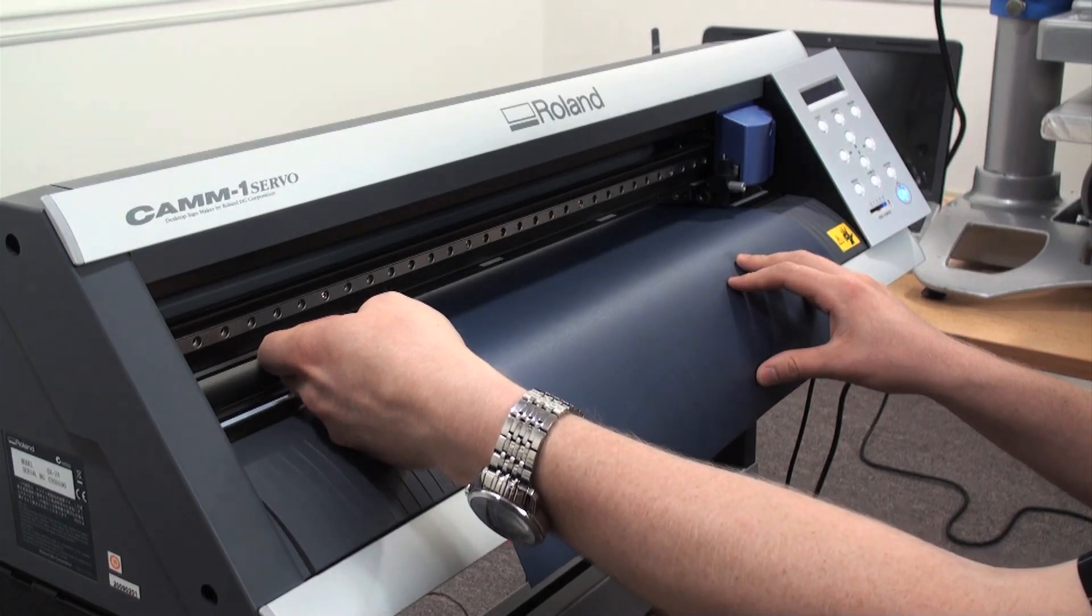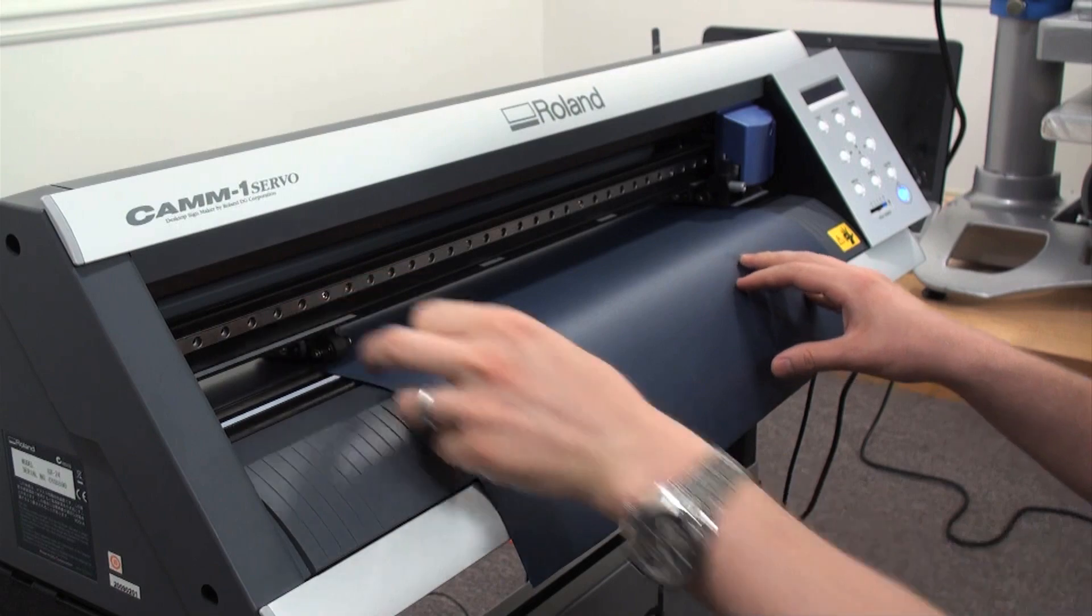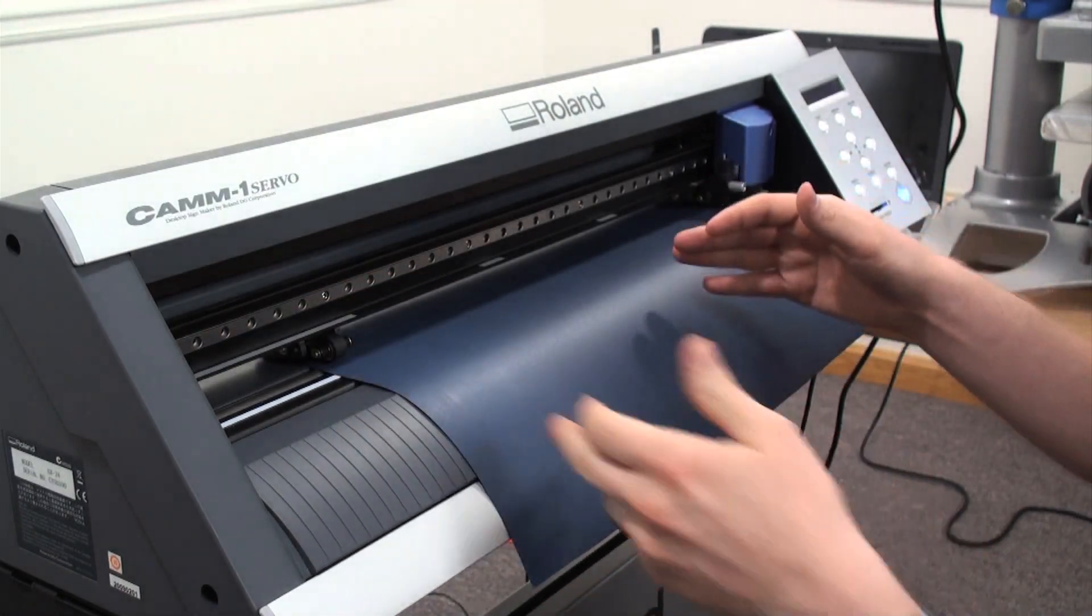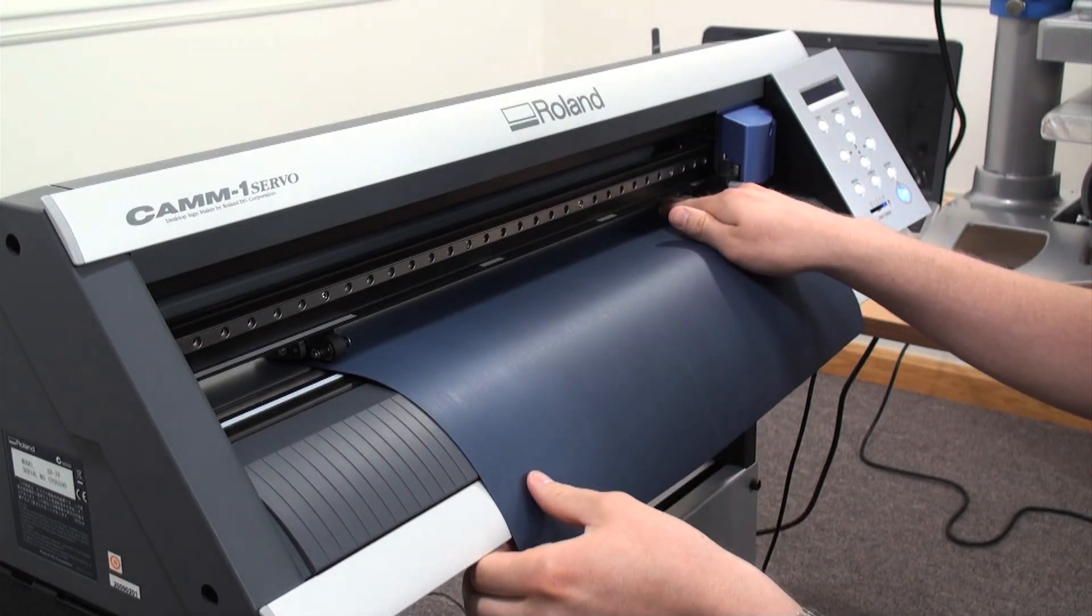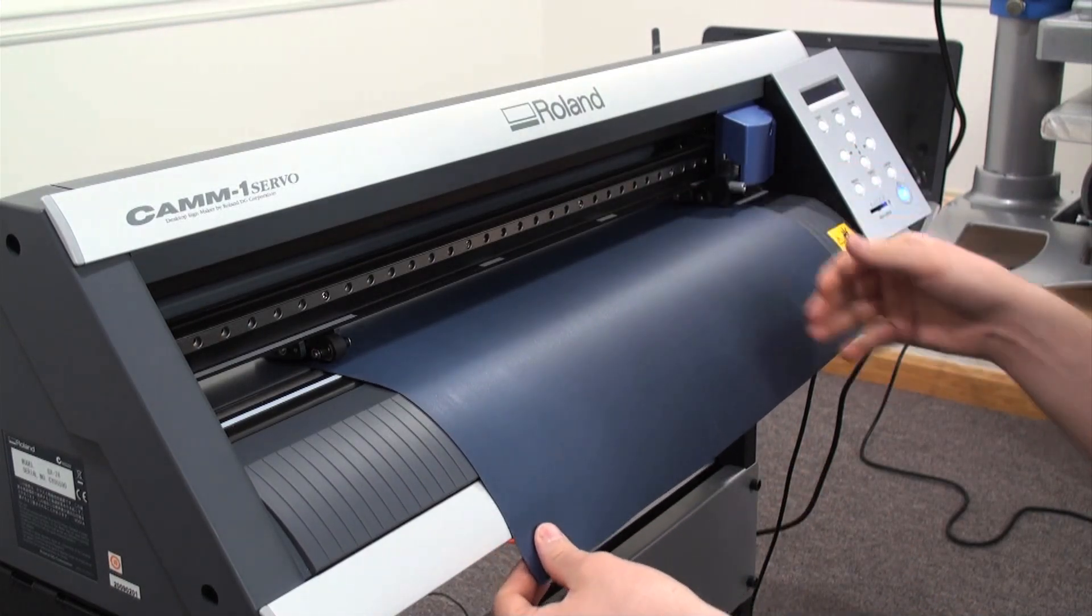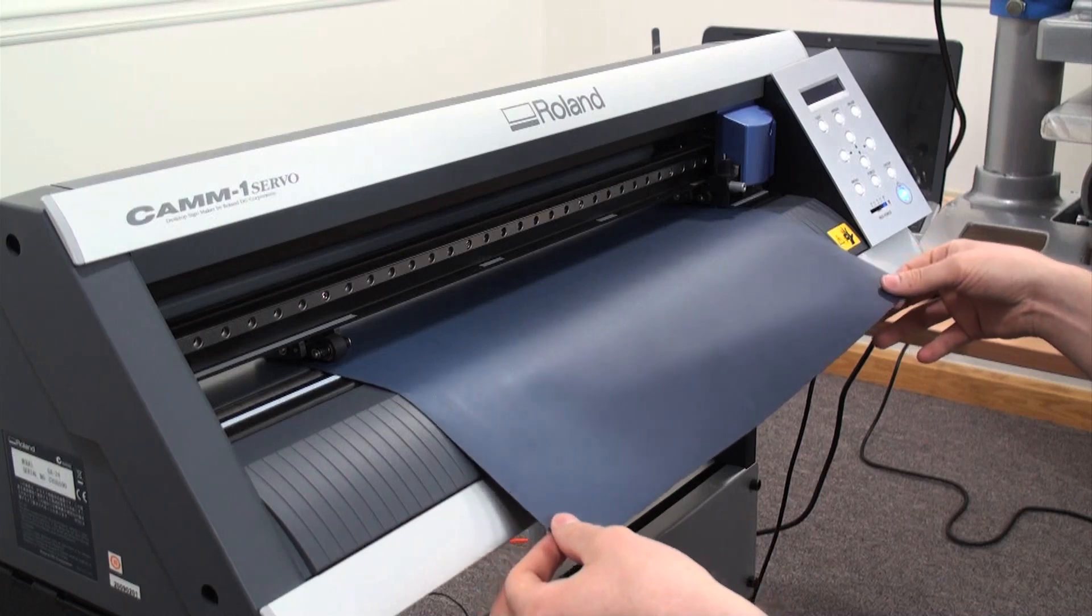So I always recommend bumping them in slightly so if the machine doesn't track 100% accurate on a long piece you're not going to lose the job. You have a little bit of give there. So we'll push these out fairly close to the edge but still inside enough and then we'll pull the material tight.